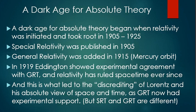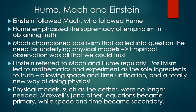But special relativity and general relativity are different theories. Einstein followed Mach, who followed Hume. Hume emphasized the supremacy of empiricism in obtaining truth. Mach championed positivism that called into question the need for underlying physical models. Empirical observation was all that we could trust, was the claim. Einstein referred to Mach and Hume regularly. Positivism led to mathematics and experiment as the sole ingredients to truth, allowing space and time unification and a totally new way of doing physics. Physical models, such as the ether, were no longer needed. Maxwell's and other equations became the primary entities in physics, while space and time became secondary.